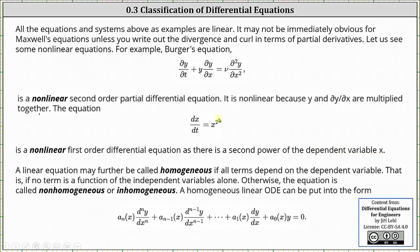Because we have dx/dt in the equation, we know x is the dependent variable and t is the independent variable. So because of the x squared, we have a nonlinear first order differential equation.